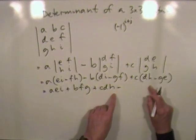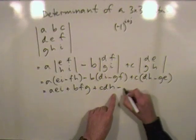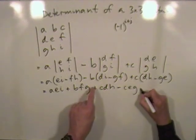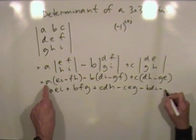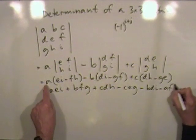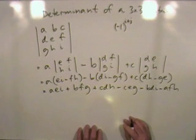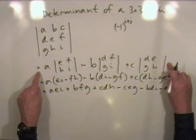Start from the side, C, E, G, so minus C, E, G, minus B, D, I, minus A, F, H. Now that's exactly the same as working at the determinant that way.